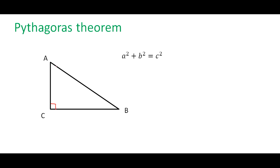In terms of labeling, this is point A. The side that is opposite to A we call small a. The side that is opposite to C is called small c. And the side that is opposite to B we call small b. The side opposite the right angle is always the hypotenuse, or the longest side in the right angle triangle.